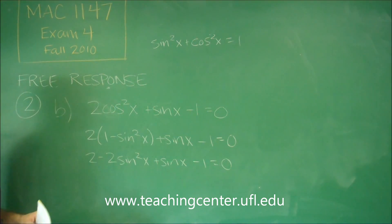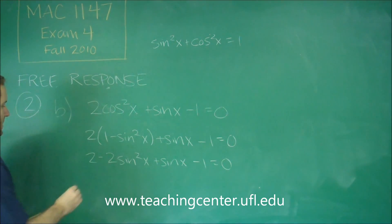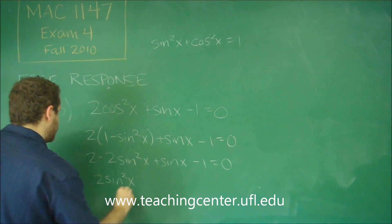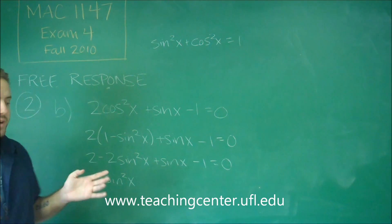Combining all of our like terms and making the coefficient on your sine squared positive, that's usually a good idea. We'd get 2 sine squared x. Remember, since this is equal to 0, you can reverse the signs on everything, and that's fine.